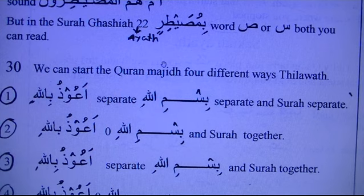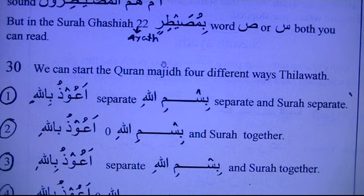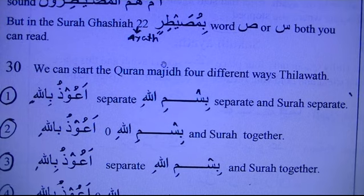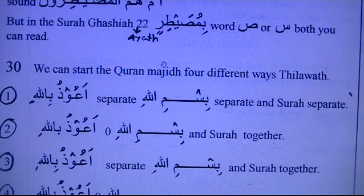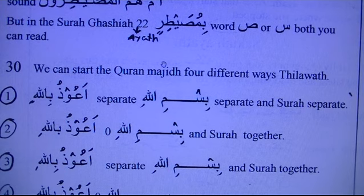Option one: we start with A'uzubillah, then stop, then say Bismillah, then stop again, then start the surah. For example: A'uzubillah minash shaytanir rajeem — stop — Bismillahir rahmanir raheem — stop — Alhamdulillahi rabbil alameen. This is the safe option for everyone.